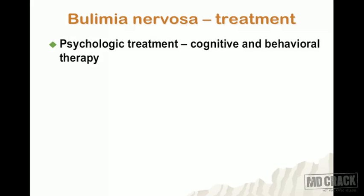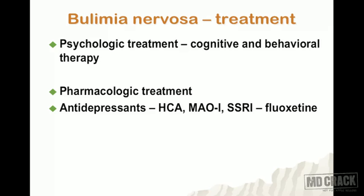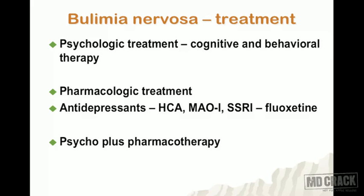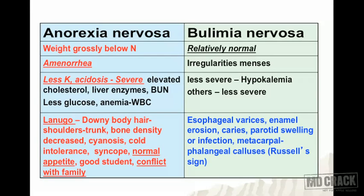Management of bulimia nervosa includes psychological treatment in the form of cognitive behavioral therapy, and pharmacologic treatment with antidepressant drugs — including heterocyclic antidepressants, MAO inhibitors, and SSRIs such as fluoxetine. Antidepressant treatment responds well in bulimia nervosa. Combined psychological treatment and pharmacotherapy together produce a good response.